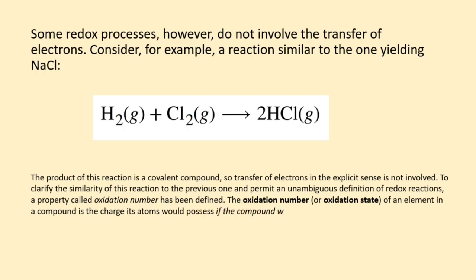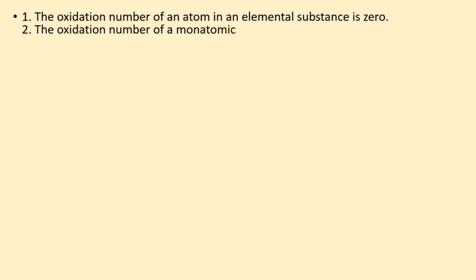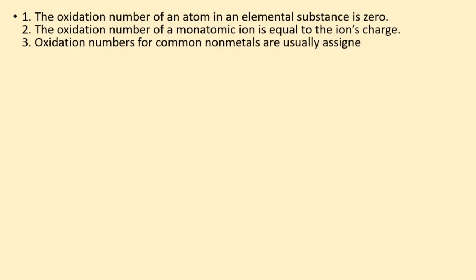The oxidation number, or oxidation state, of an element in a compound is the charge its atoms would possess if the compound was ionic. The following guidelines are used to assign oxidation numbers to each element in a molecule or ion. 1. The oxidation number of an atom in an elemental substance is 0. 2. The oxidation number of a monatomic ion is equal to the ion's charge. 3. Oxidation numbers for common nonmetals are usually assigned as follows.